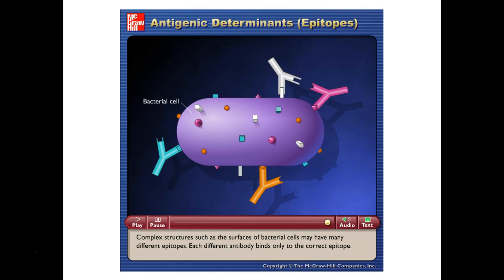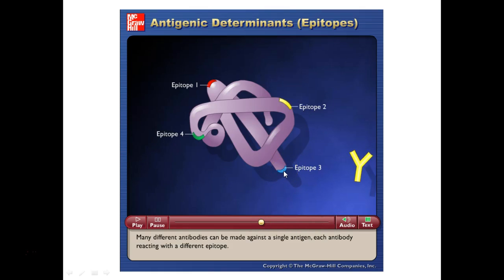As it relates to epitopes, we're talking specifically down to the molecular level where an antibody is binding. Because antigens themselves can be quite complex, we can actually produce multiple antibodies against the same antigen. We're going to make as many as we possibly can that will recognize that antigen. This interaction is very small — it's down to the molecular level. It could be like 10 amino acids in one section of the protein that a particular antibody is binding to.